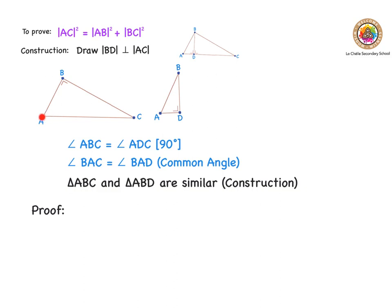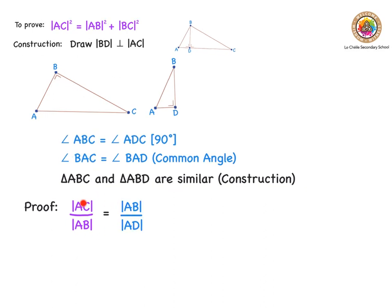I want to work on AB squared, so I'm going to use one side here — the short side — and the long side. The hypotenuse of the big triangle: AC, the longest side, divided by AB, the shortest side. For the smaller triangle, the longest side is AB and the shortest side is AD. So I'm going to put those equal: AC over AB is equal to AB over AD.